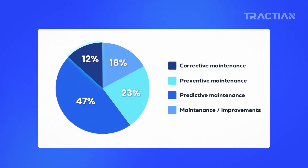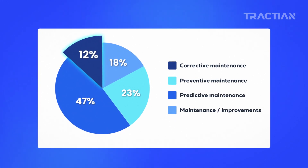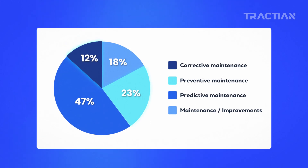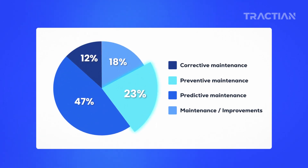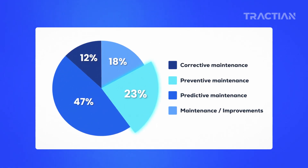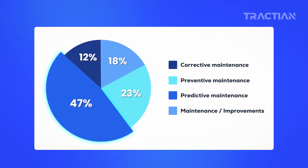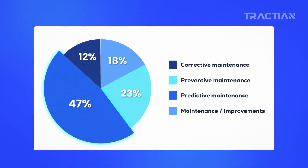In global reliability standards, the maintenance manager should keep the unplanned corrective actions below 20%. It's always good to restrict them as much as possible, and leave the preventive interventions at about 30–40%, and maximize the predictive ones.